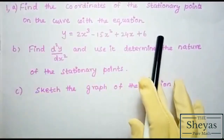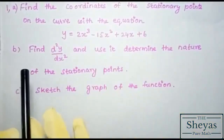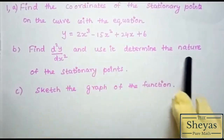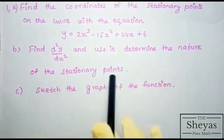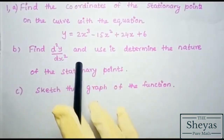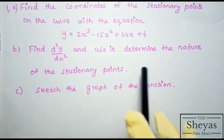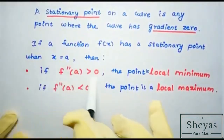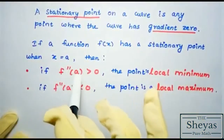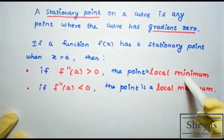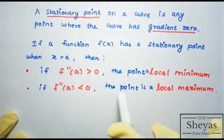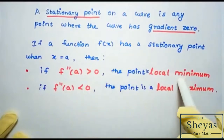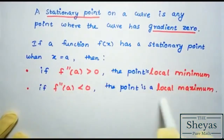Now for part b, we need to find d²y/dx² and determine the nature of the stationary points. Recall: if f double dash of a is greater than 0, the point is a local minimum; if f double dash of a is less than 0, the point is a local maximum.